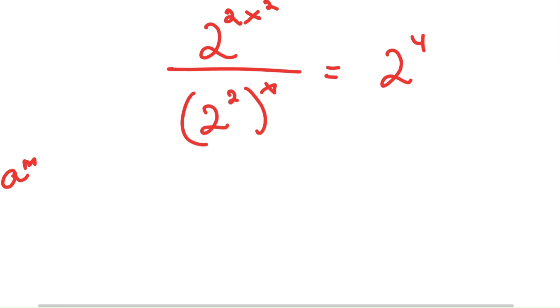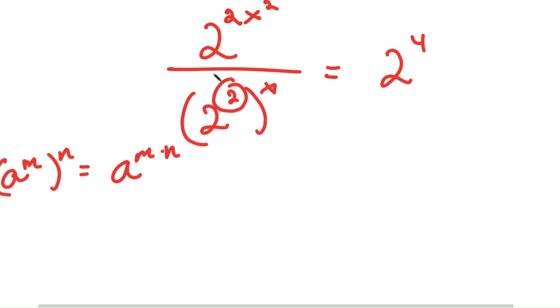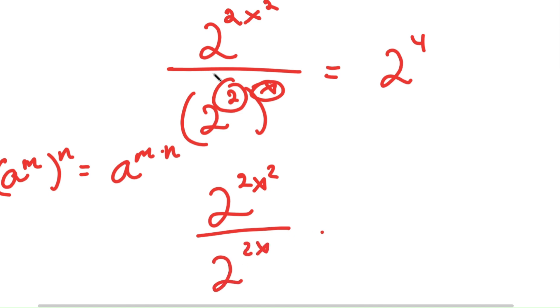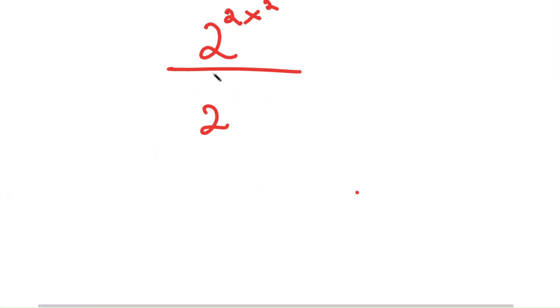Now if I have something in the form a to the power of m to the power of n, this is equal to a to the power of m times n. So 2 to the power of 2 to the power of x — the 2 and the x multiply with each other — giving us 2 to the power of 2x squared over 2 to the power of 2x is equal to 2 to the power of 4.